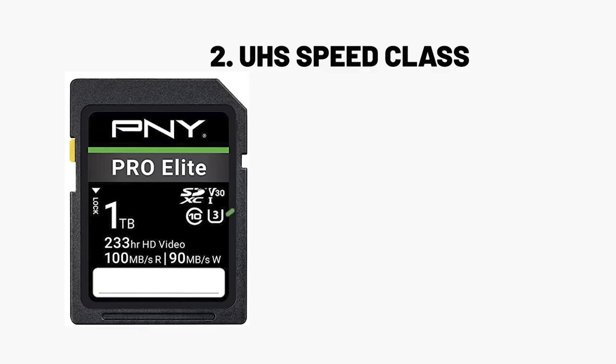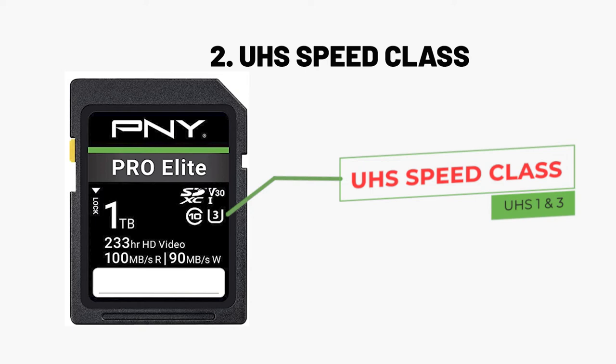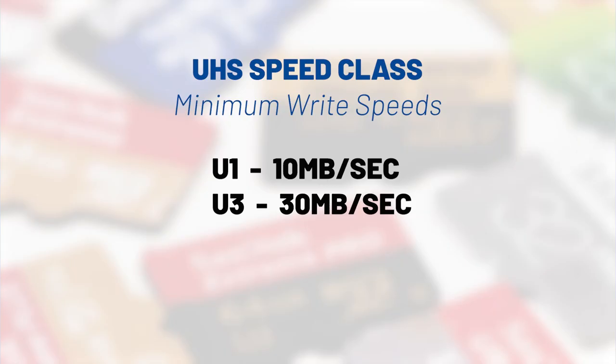The next generation in speed class is called the UHS Speed Class, and there are two UHS speed classes. You will see them on your card as a 1 or a 3 contained in a U. The U with a 1 means a minimum write speed of 10 megabytes per second — the same as Speed Class C10. The difference comes with the maximum write speed: even though they share the same minimum, UHS cards will have a maximum write speed beyond that of the standard Speed Class cards.